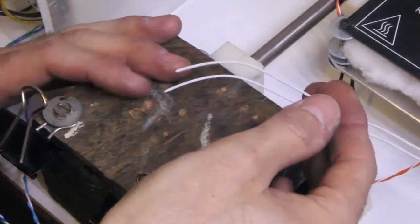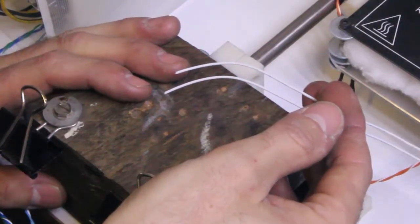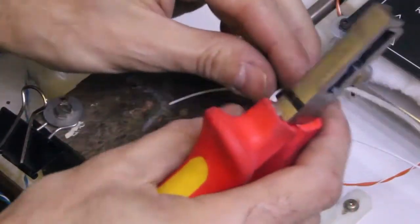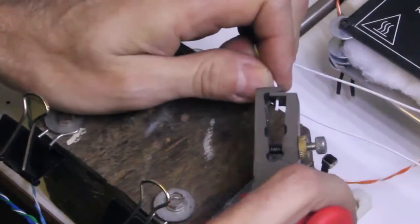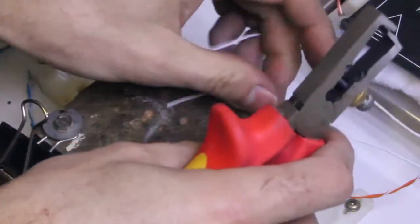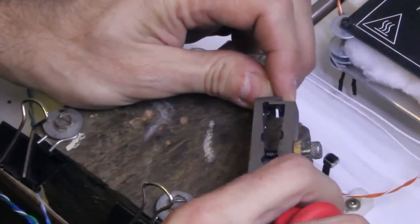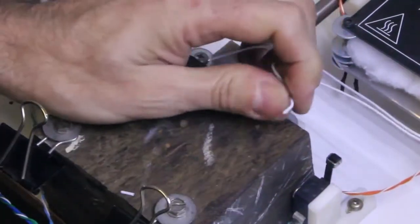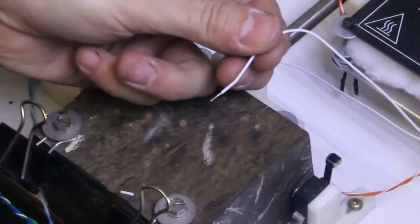So now we're going to solder some wires onto those wires coming off the heat bed, the thermistor wires. So grab your wire strippers or side cutters and strip probably a good 5 or 6mm on this one. Careful not to pull too hard on the wire because you could pull it right out of the heat bed. Twist them up.